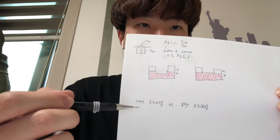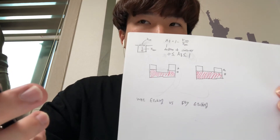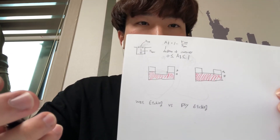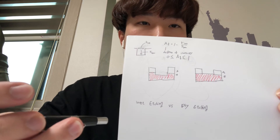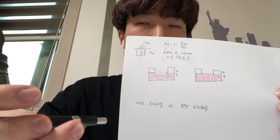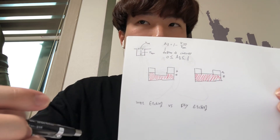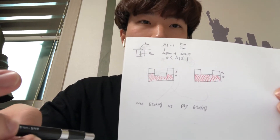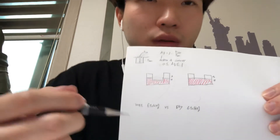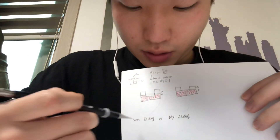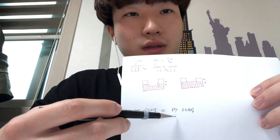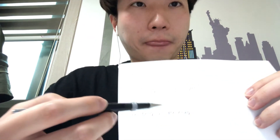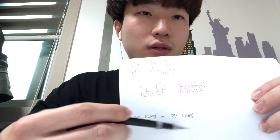And then wet etching and dry etching. Wet etching is putting the material in a wet solution and taking it out — we call this wet etching. It is really cheap and simple. But it is not easy to control. This is generally isotropic direction. And then dry etching is generally anisotropic etching. Meanwhile, wet etching is not so easy to control.